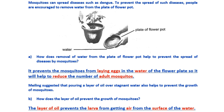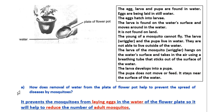Mosquitoes can spread diseases such as dengue. To prevent the spread of such diseases, people are encouraged to remove water from the plate of a flower pot. How does removal of water from the plate of a flower pot help to prevent the spread of diseases by mosquitoes?